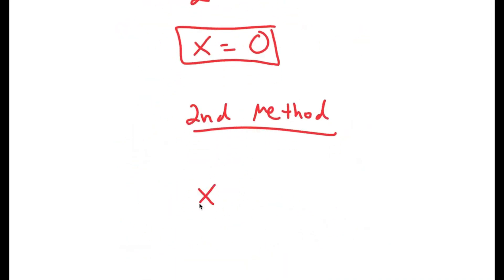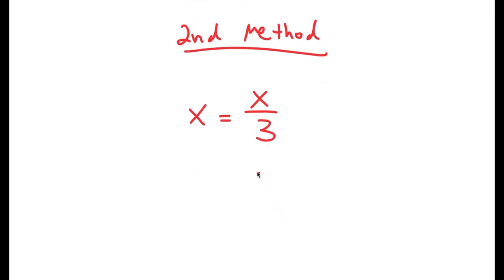So again, my equation is x equals x over 3. And this time, instead of subtracting x over 3 on both sides, I'm actually just going to start with multiplying 3 on both sides. So then these two automatically cancel out, and I get 3x is equal to x.